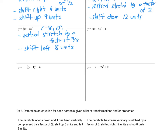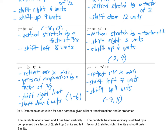Pause the video and try the next three examples on your own. Be very careful with proper communication because that is important for your communication marks. Coming back: for the first one, you should have a vertical stretch by a factor of 3, shift right 5 units, and shift up 4 units, which makes your vertex 5, 4. Check your communication to see if you have all the right words to get full marks.